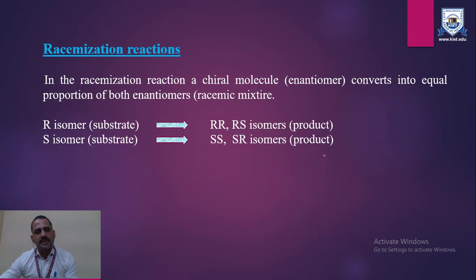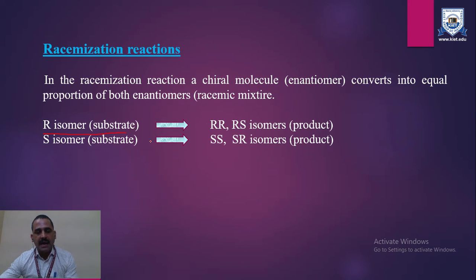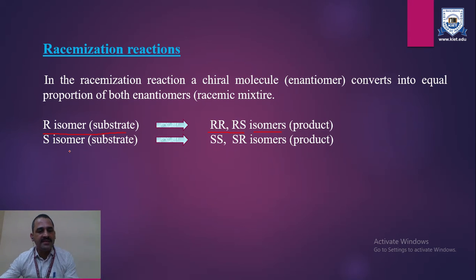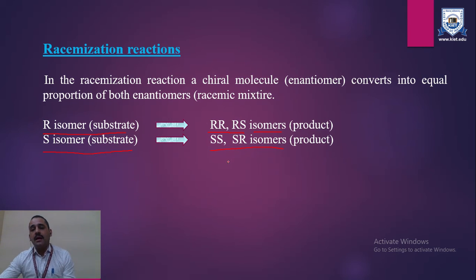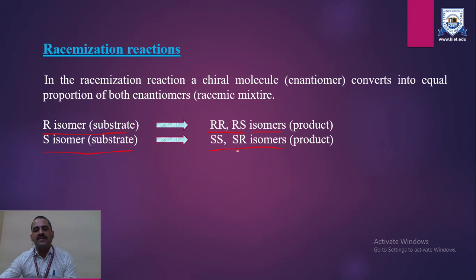The next reaction is the racemization reaction. In the racemization reaction, a chiral molecule converts into equal proportions of both enantiomers. If the R isomer is the substrate, it will be equally divided into two halves — R and S isomers — as the product of this reaction. Similarly, the S isomer of the substrate will also divide into equal halves. So R and S isomers, or L and D isomers, or (+) and (−) isomers, are formed in a 1:1 ratio — both isomers are represented in the reaction.